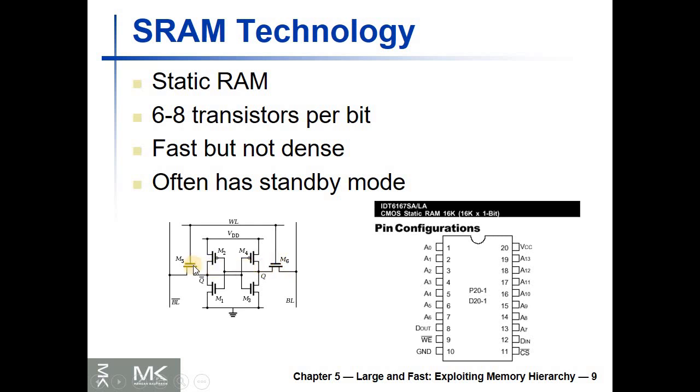This is an example of a static RAM chip. This chip has 14 address lines so it can store 2 to the power 14, which is 2 to the power 4 multiplied by 2 to the power 10, which is 16K locations.